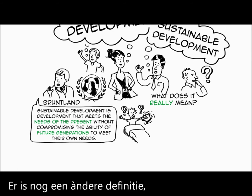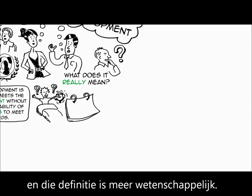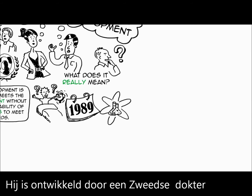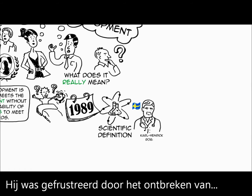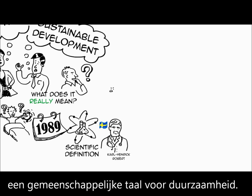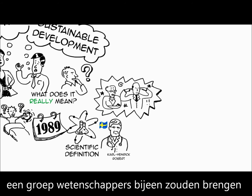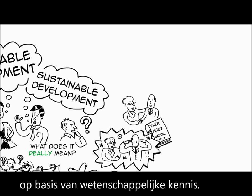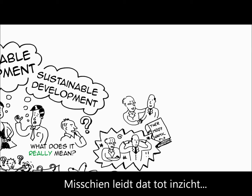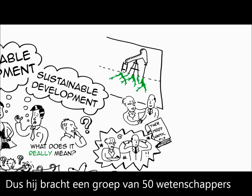There's another one, one that was created in the late 1980s, that is more of a scientific definition. It was created by a Swedish doctor, his name is Carl-Henrik Robert, and he was frustrated with the lack of common language around sustainability. So he thought, what if we manage to get a group of scientists together and to agree on what sustainability means based on science and thermodynamics? And maybe that will lead to understanding what the root causes of unsustainability are. So that's what he did.